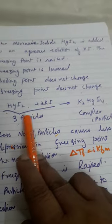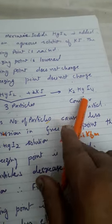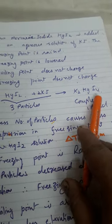As we know, HgI2 when reacts with KI, it will combine with it and form a complex called K2HgI4.